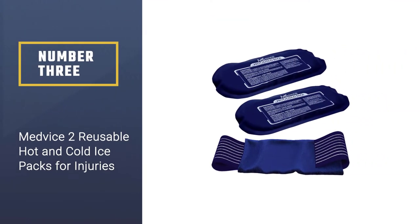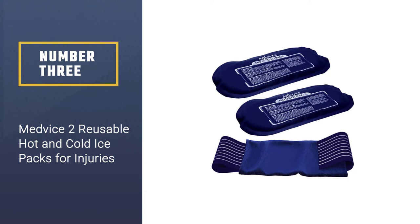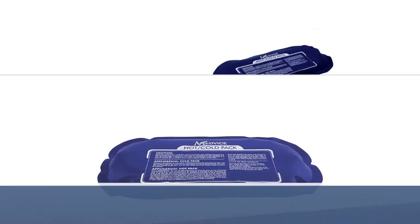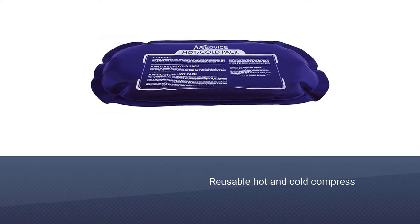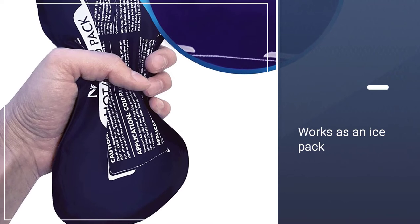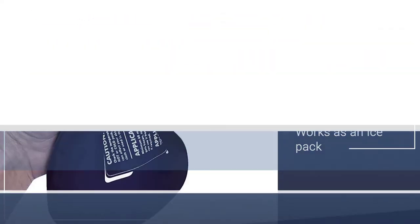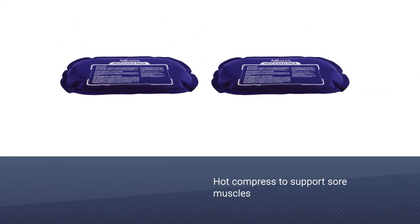Number three, Med Vice 2 reusable hot and cold ice packs for injuries. This reusable hot and cold compress works as an ice pack and a hot compress to support sore muscles, aching joints, inflammation, cramps and therapy. The gel pack comes with an adjustable band that allows full body support and easily clamps around your back.